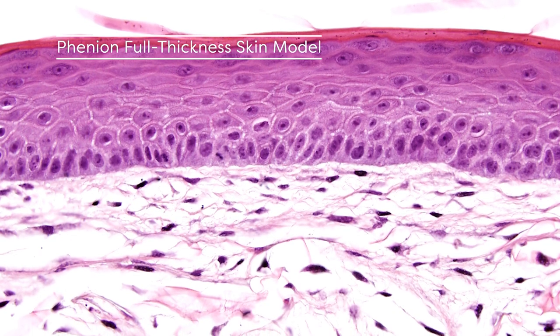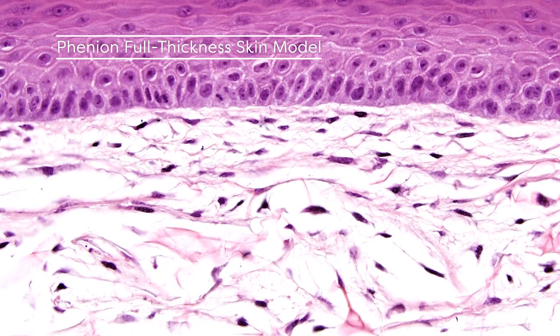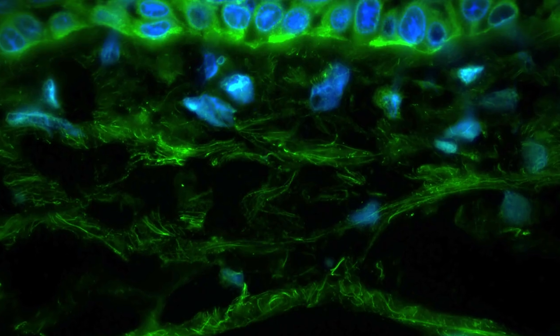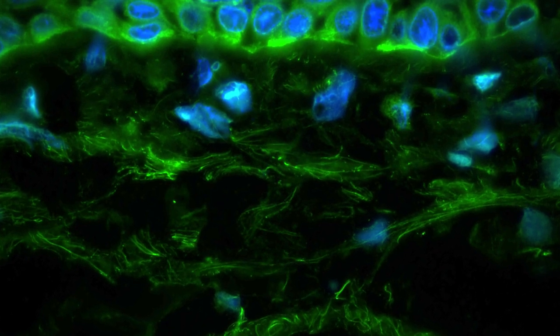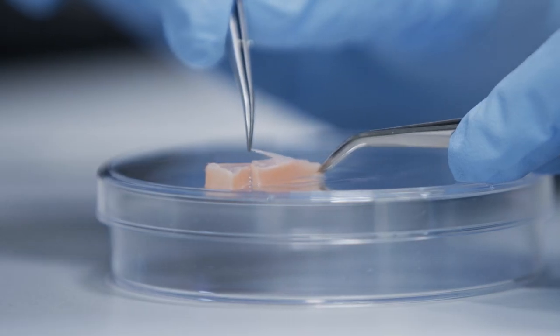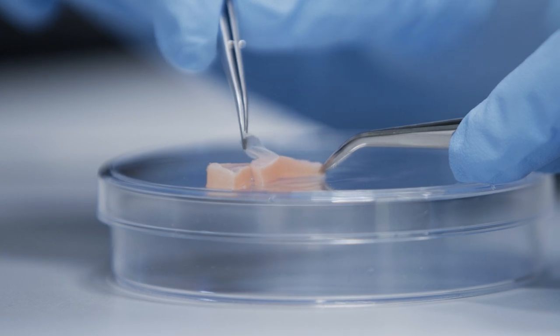For the full-thickness skin models, we use the IP-protected Phenion collagen sponge matrix. In the first step we use fibroblasts on top of the scaffold, and on top we seed the keratinocytes, which construct the stratified epidermis during culture.